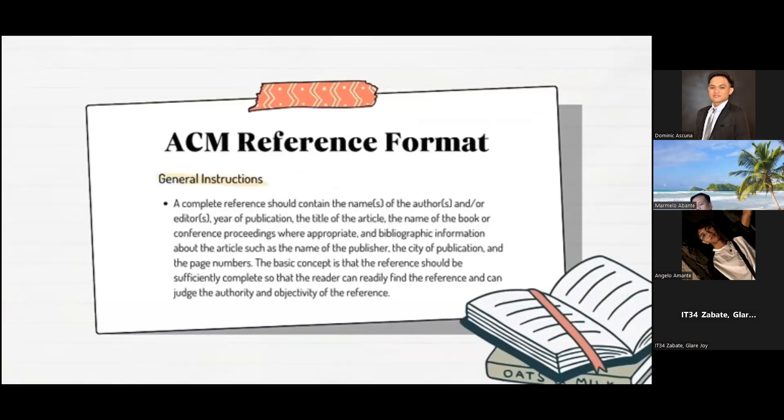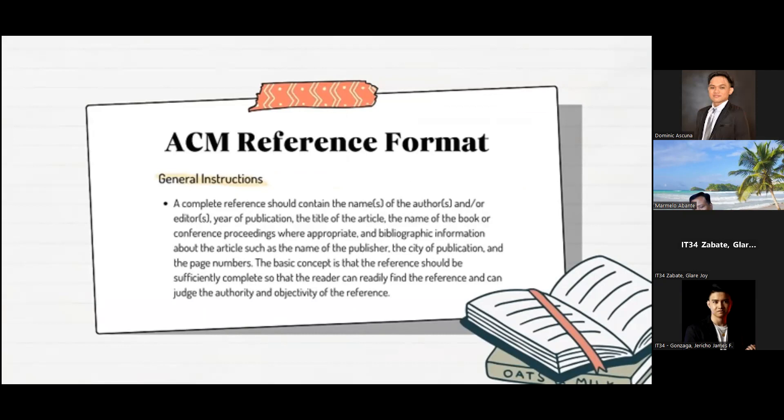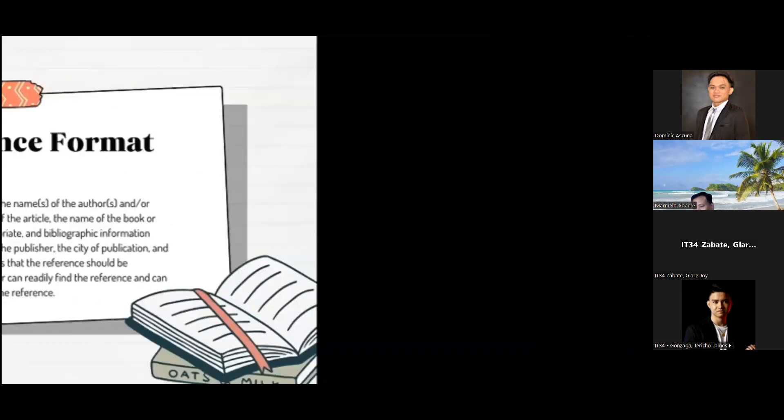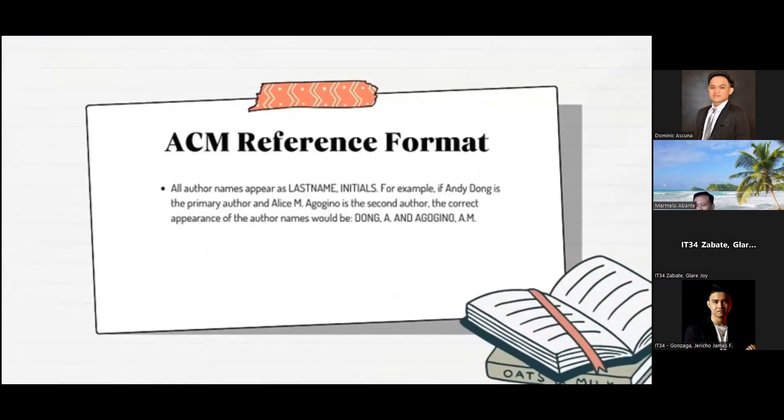ACM reference format general instructions: A complete reference should contain the names of the authors and/or editors, year of publication, the title of the article, the name of the book or conference proceeding where appropriate, and the bibliographic information about the article, such as the name of the publisher, the city of publication, and the page number. The basic concept is that references should be sufficiently complete so that the reader can readily find the reference and can judge the authority and objectivity of the reference. All authors' names appear as last name, comma, initial. For example, if Andy Dong is the primary author and Alice M. Agogino is the second author, the correct appearance of the author names would be Dong, A. and Agogino, A.M.